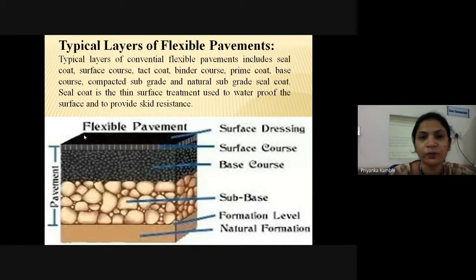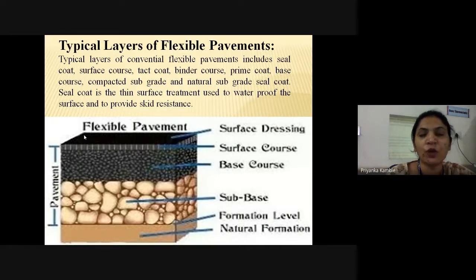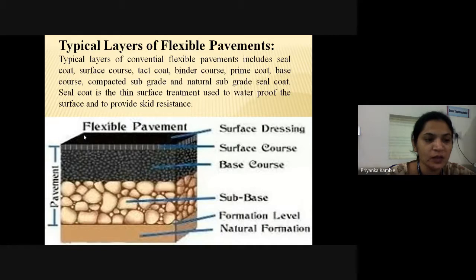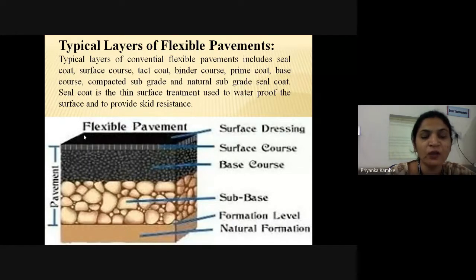Typical layers of conventional flexible pavements include a seal coat. Seal coating is the process of applying a protective coating to asphalt-based pavement to provide a layer of protection from elements like water, oils, and UV damage. The seal coat serves as the asphalt's protective barrier against wear, freezing, and vehicle leaks, and is marketed as a protective coating that extends the life of asphalt pavements.